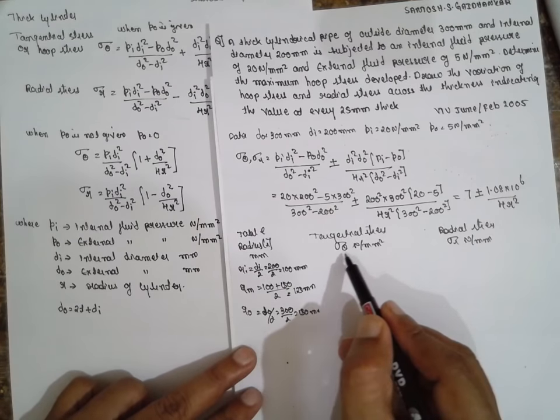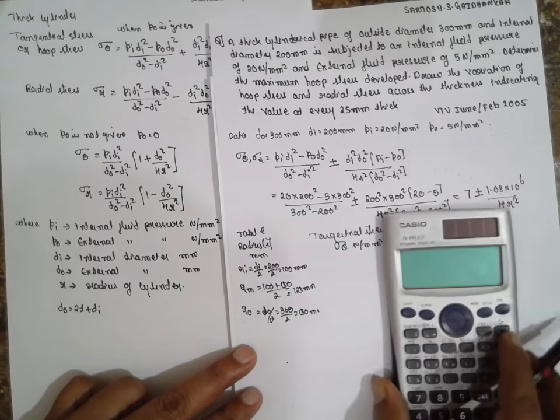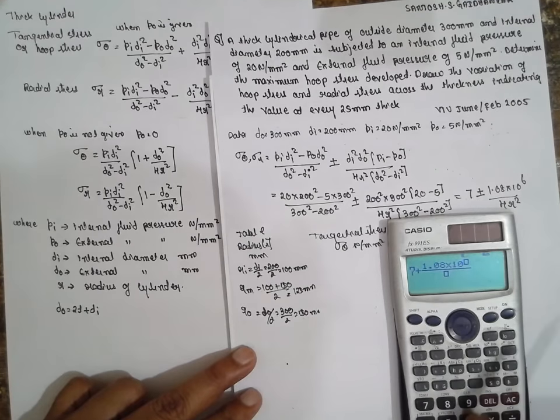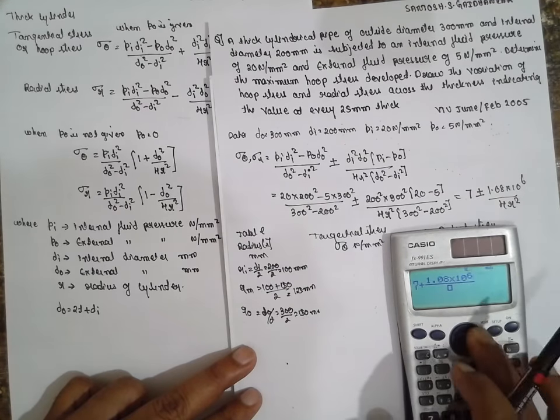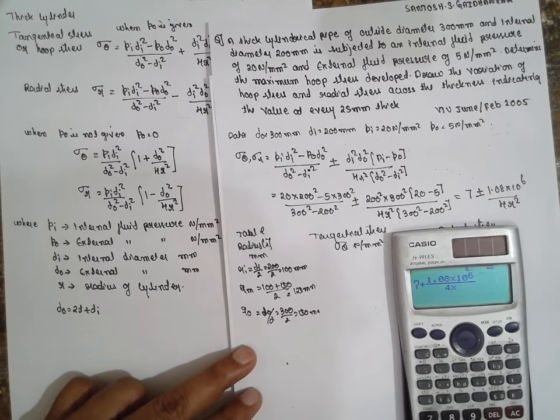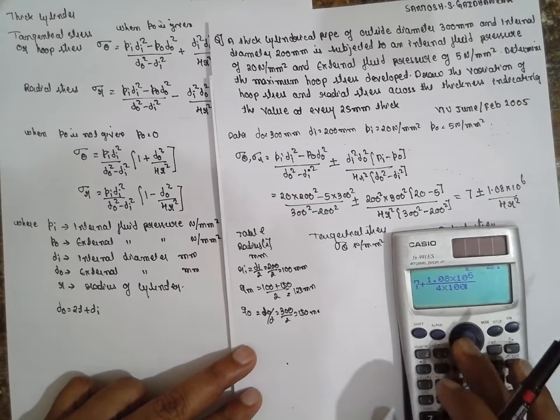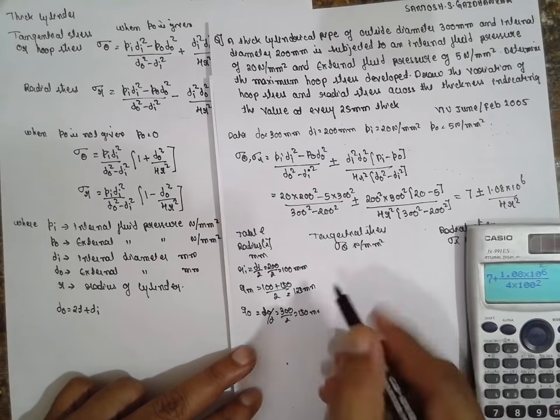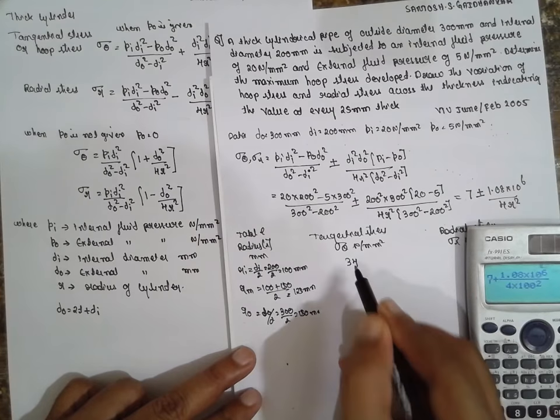Now we have to substitute the theta value. How to get theta? 7 plus 1.08 into 10 raise to 6 divided by 4 into what is Rᵢ value? 100. You will obtain, sorry Rᵢ square. 34. This is the 34 value. 34.